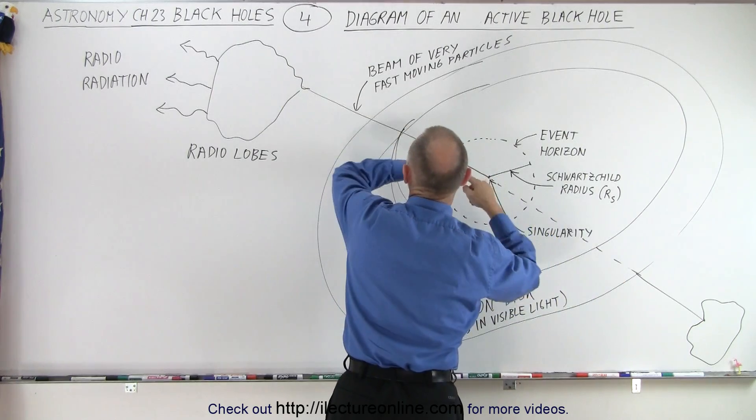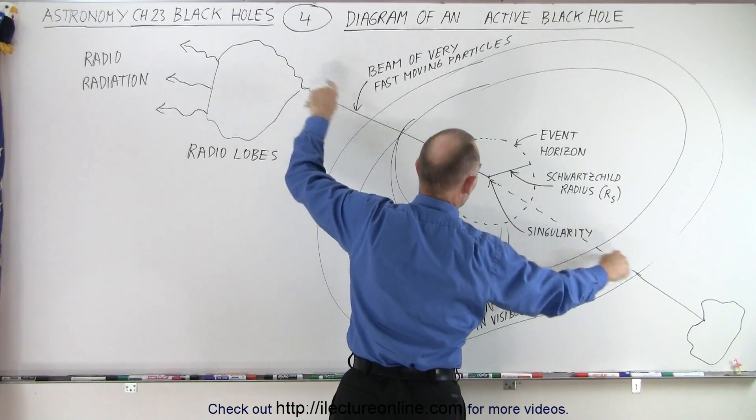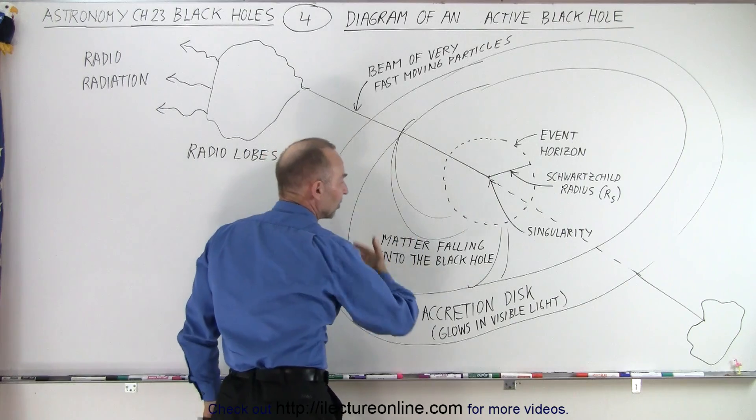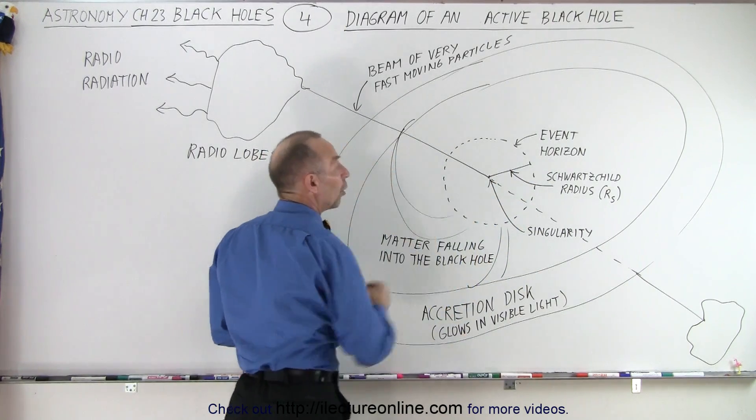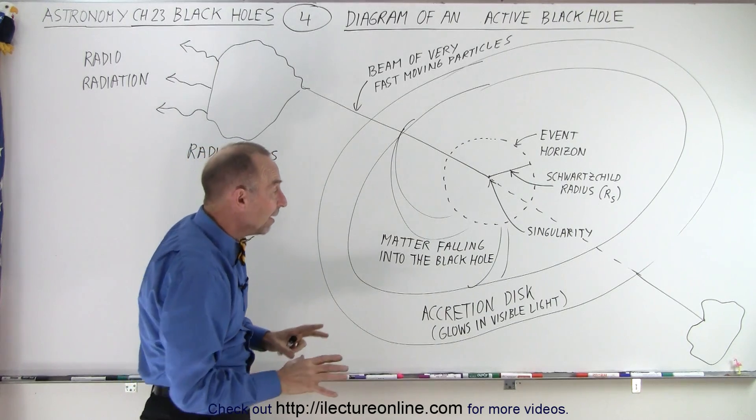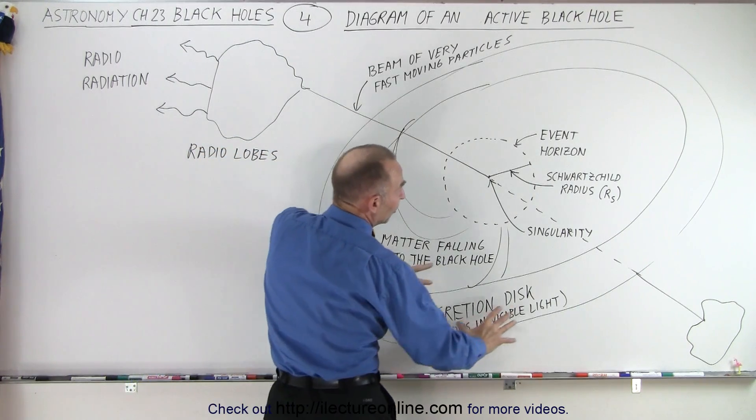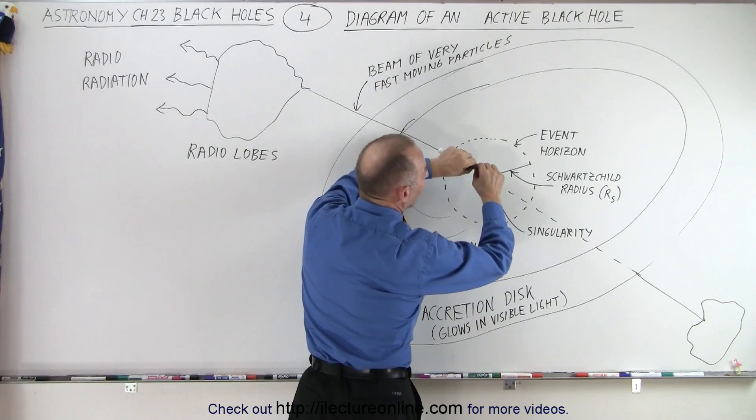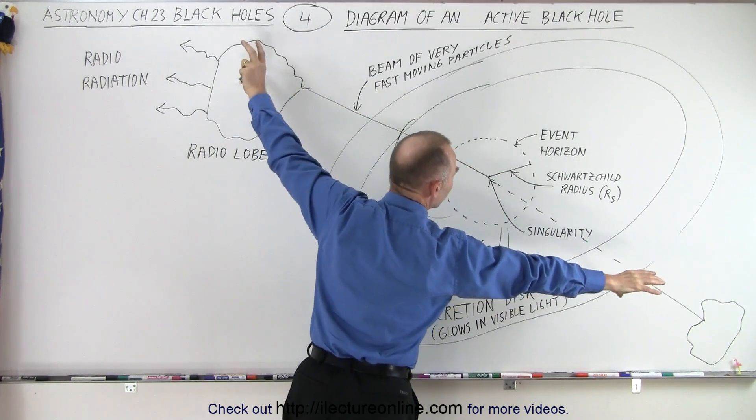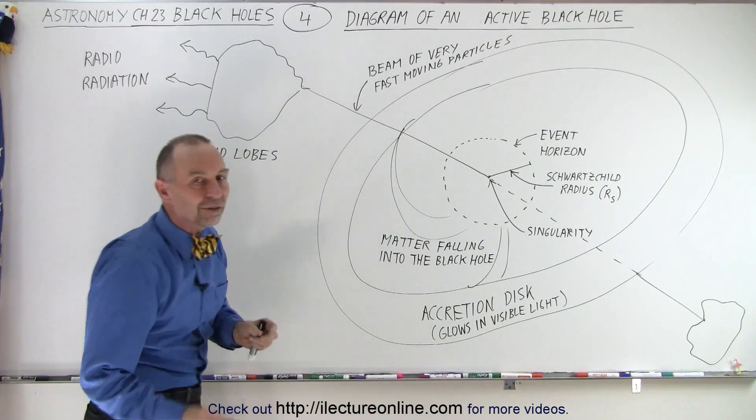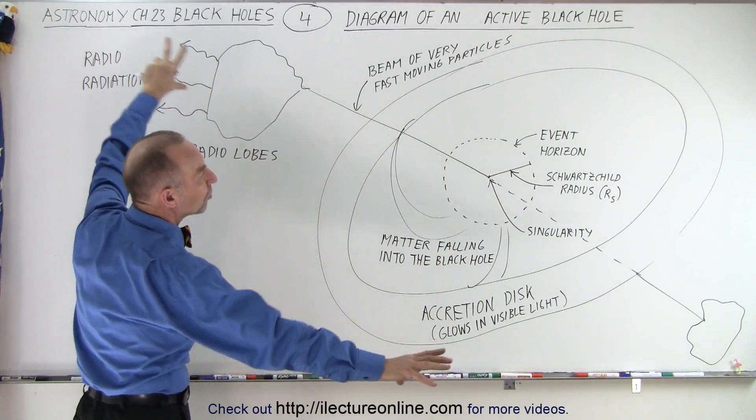You can also potentially mention the beams of fast moving particles, and that the matter falls in from the accretion disk into the black hole. It is estimated that roughly 60% of the accretion disk will eventually get pulled into the black hole, and about 40% of the material will get pushed away from the very powerful magnetic fields in those beams out to the radio lobes.